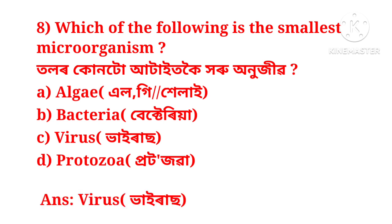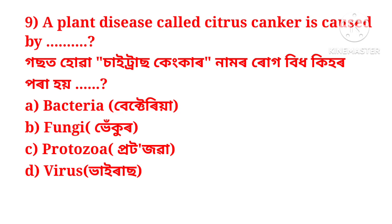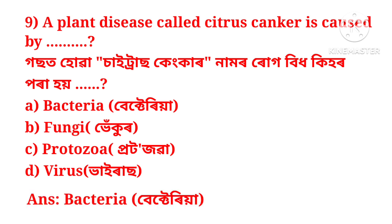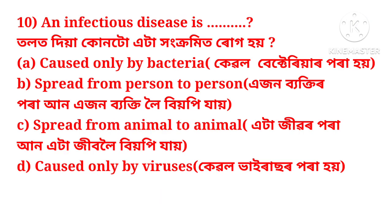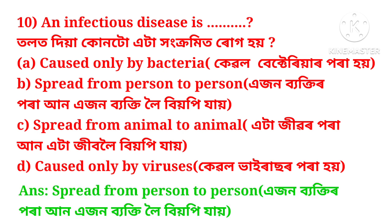The next question is: a plant disease called citrus canker is caused by — cable bacteria? The next question is: an infectious disease is one that can spread from person to person.